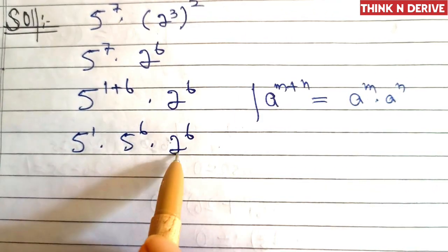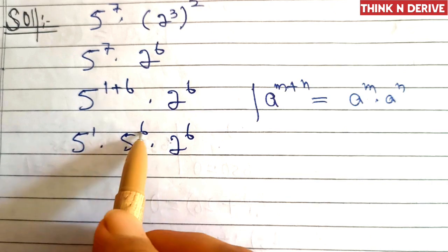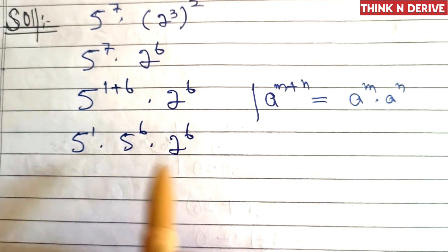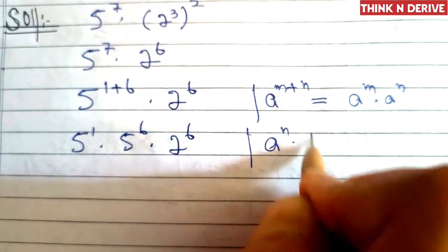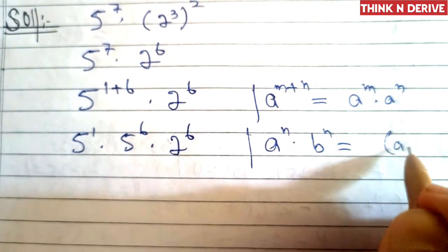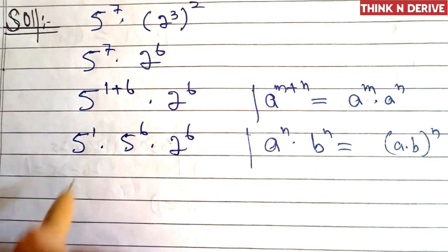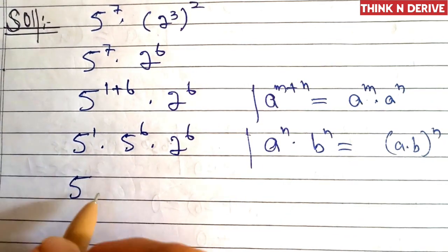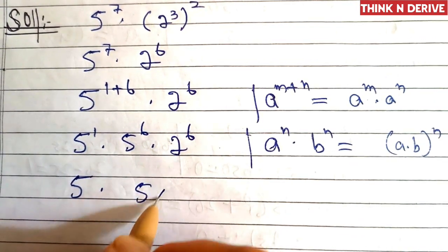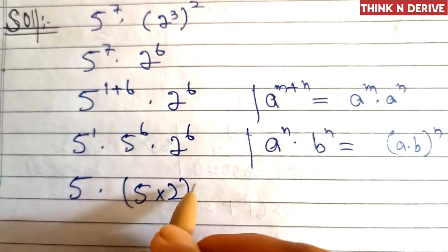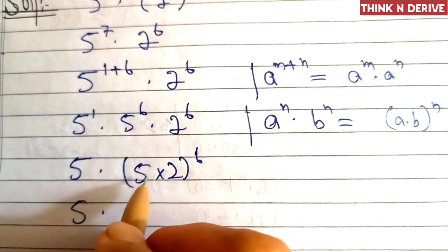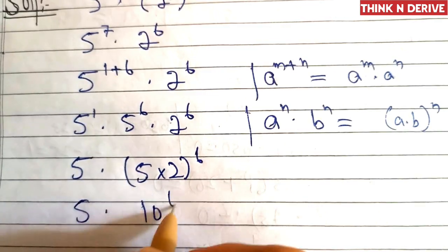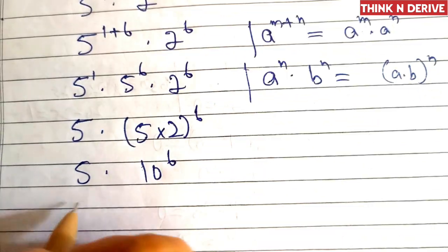Now this is the multiplication of same powers with different bases, so we'll apply a rule here that's a power n into b power n is equal to a into b power n. So this will become 5 into 5 into 2 power 6, that is 5 into 5 into 2 is 10 power 6.